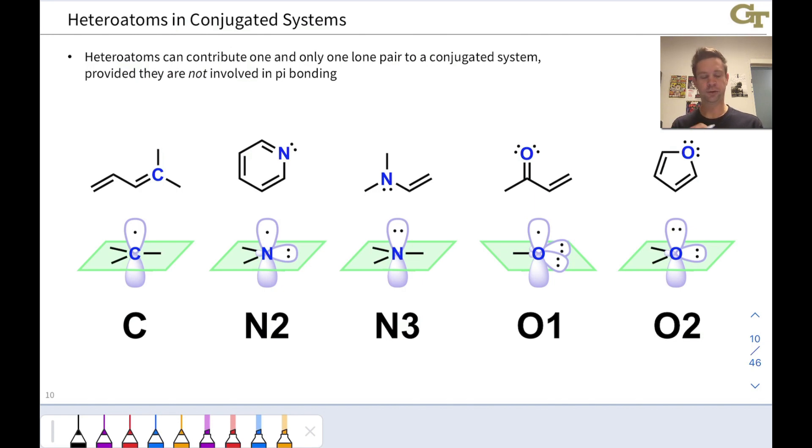We noted this earlier. So if an atom such as this nitrogen here is already engaged in pi bonding, its p-orbital is already being used for bonding. So any additional lone pairs do not participate in the pi system or not part of the pi system. They're occupying hybrid orbitals and they're part of the sigma bonding system.